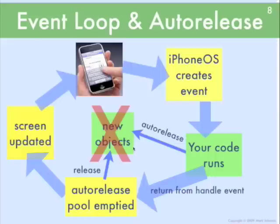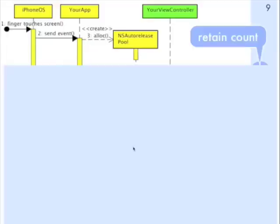Let's look at that in more detail and see precisely what happens. This is a sequence diagram where we're going to step through that event loop cycle and see who the players are and what the messages are exactly. Across the top we have objects: first, this represents the iPhone itself — the iPhone OS object. This object represents your app, the entire executable process which is your iPhone application. And we have the auto-release pool object and then your view controller.